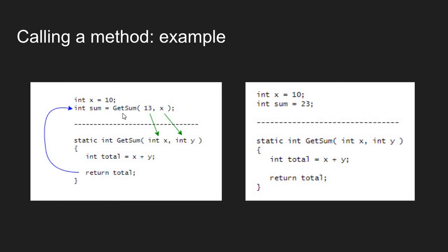When I call the getSum method in main, I just type its name with a pair of parentheses and pass two arguments: the value 13 and the variable x which contains 10. These values are stored into the input parameters — input parameter x holds 13, and input parameter y holds 10. So x will be 13 and y will be 10 inside the getSum method.